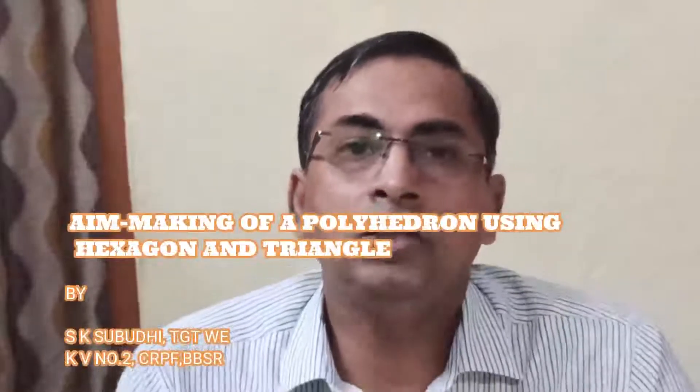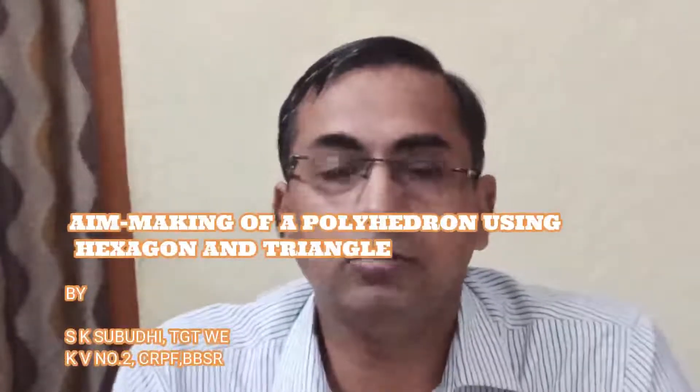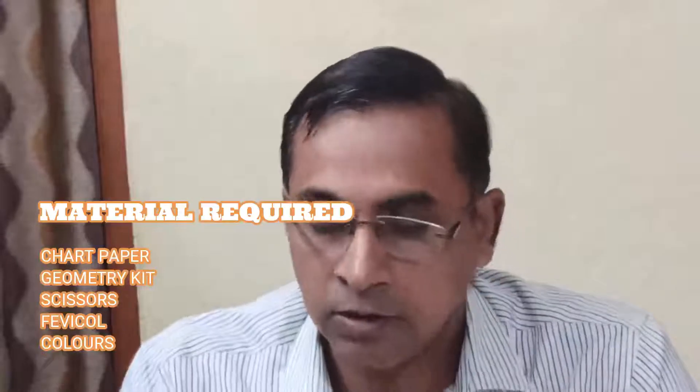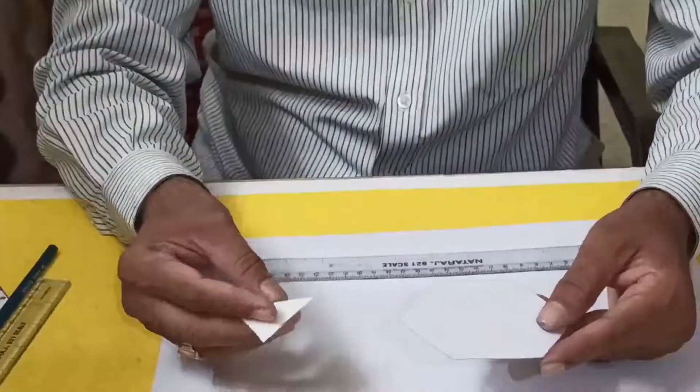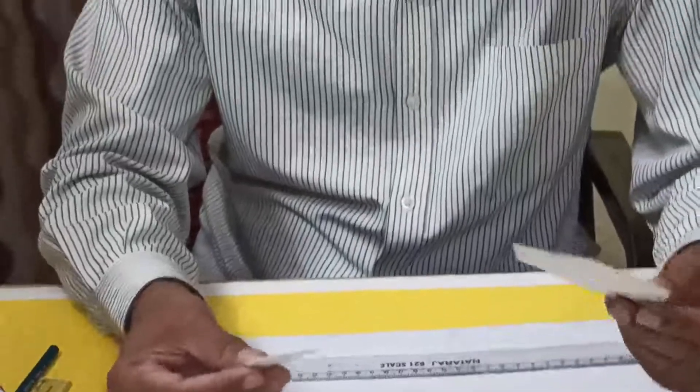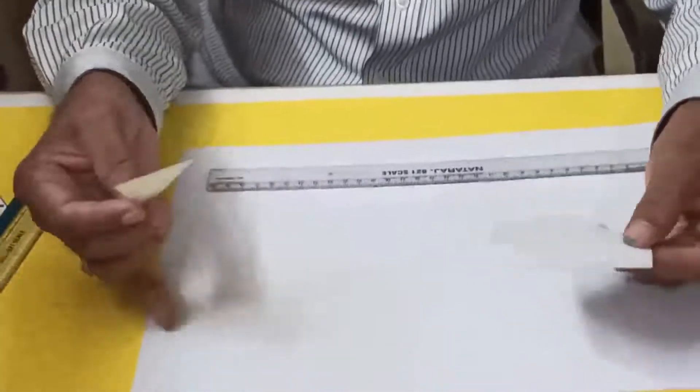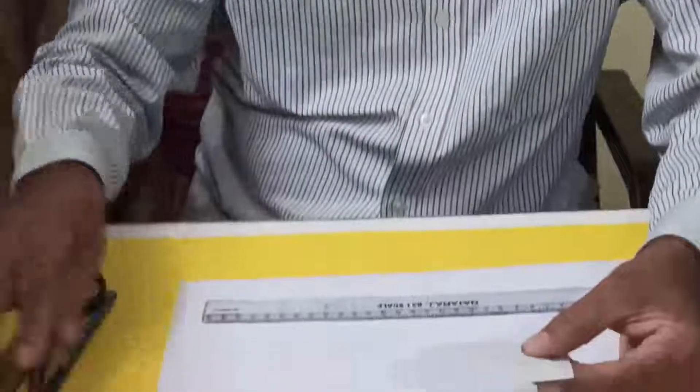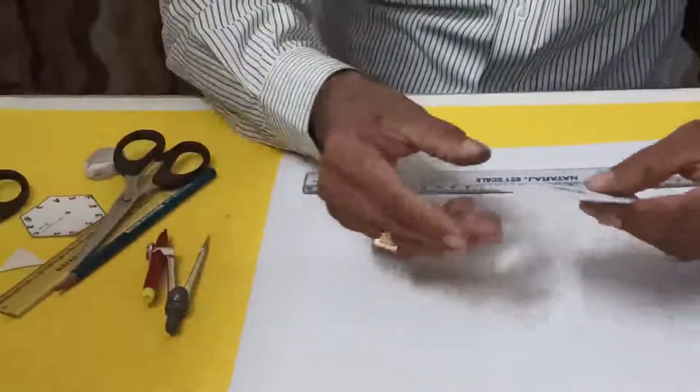Good morning students, now I'll teach you to make a polyhedron, a three-dimensional shape using four hexagons and four equilateral triangles. I'm taking the hexagon side as four centimeters and equilateral triangle side also four centimeters. I'm using chart paper, scale, scissor, pencil, eraser, and compass. So let us start.